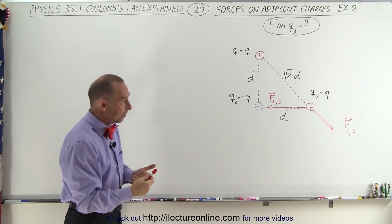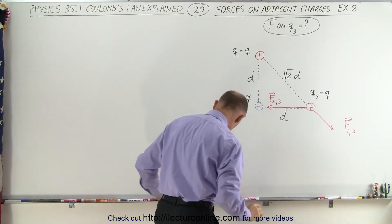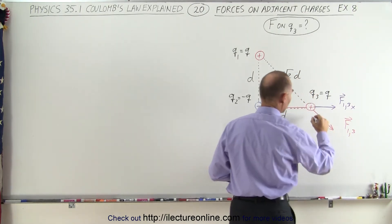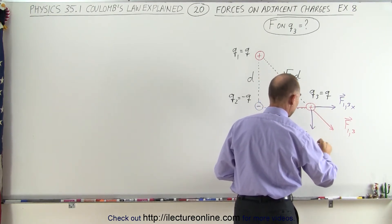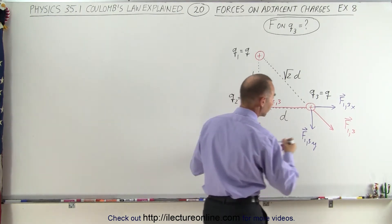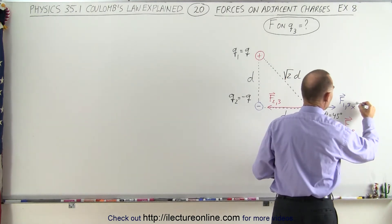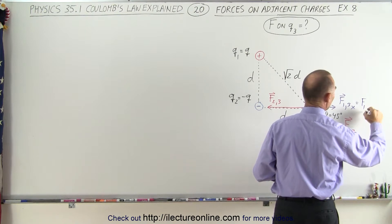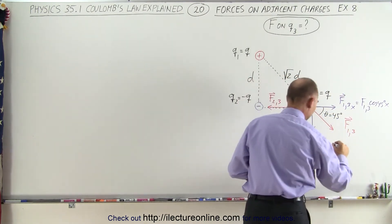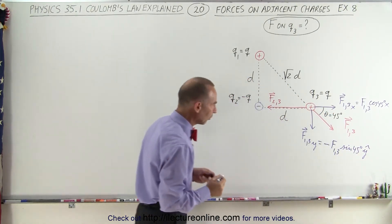Since we're going to have to add these forces together, we have to find the components of any force that's not pointing either in the x direction or the y direction — such as F1,3. That means we're going to have to find the component in the x direction, F1,3x, and the component in the y direction, F1,3y. Notice that these distances are the same, so there's some symmetry, which means the angle here will be 45 degrees. So F1,3x equals F1,3 times cosine 45°, and F1,3y equals negative F1,3 times sine 45° — negative because it's pointing downward.